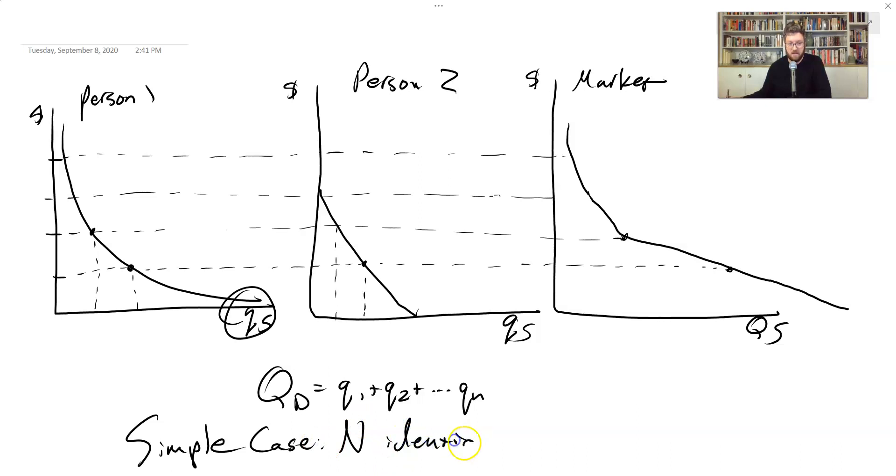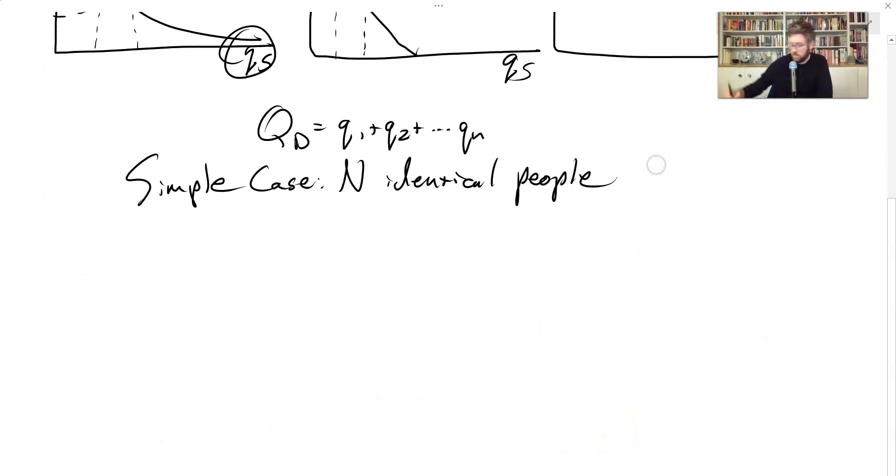They all have the same demand, same income. Well then, we just need to say that the total demand is N times each person's individual demand. And the last thing I want to point out is that these demand functions—